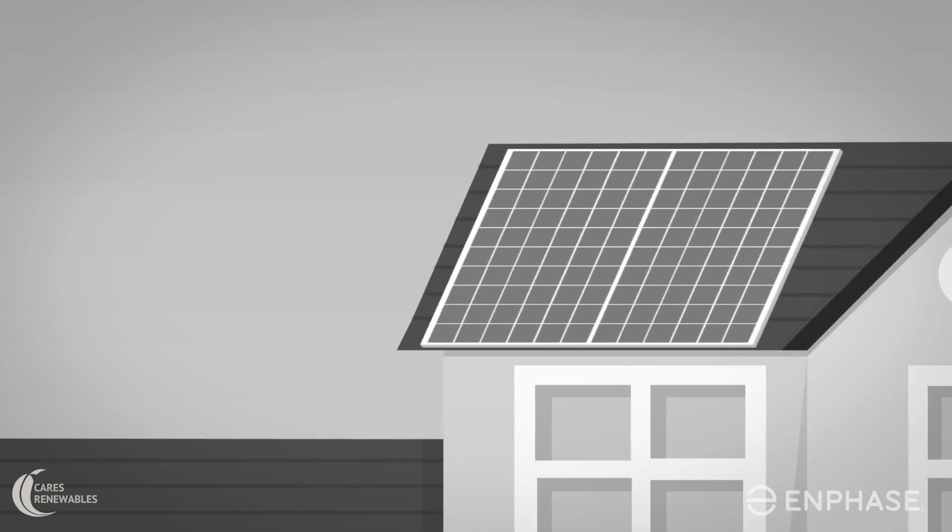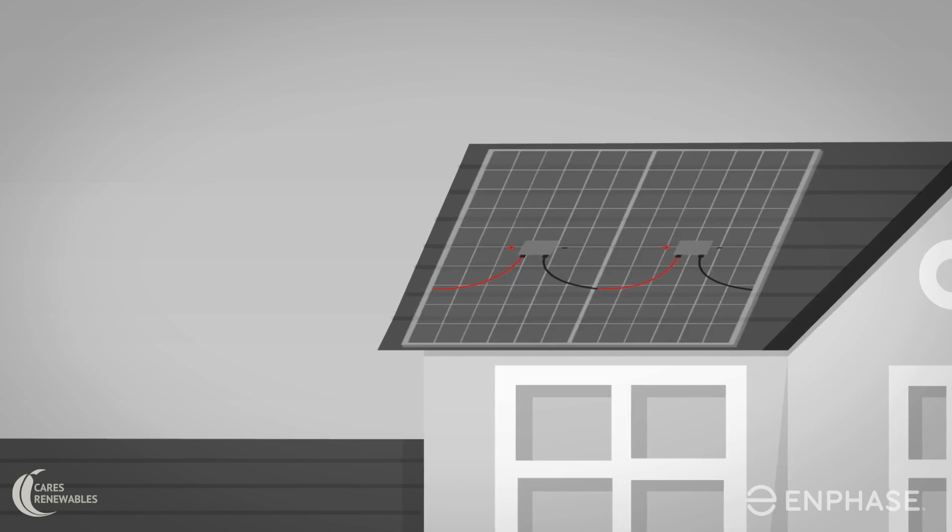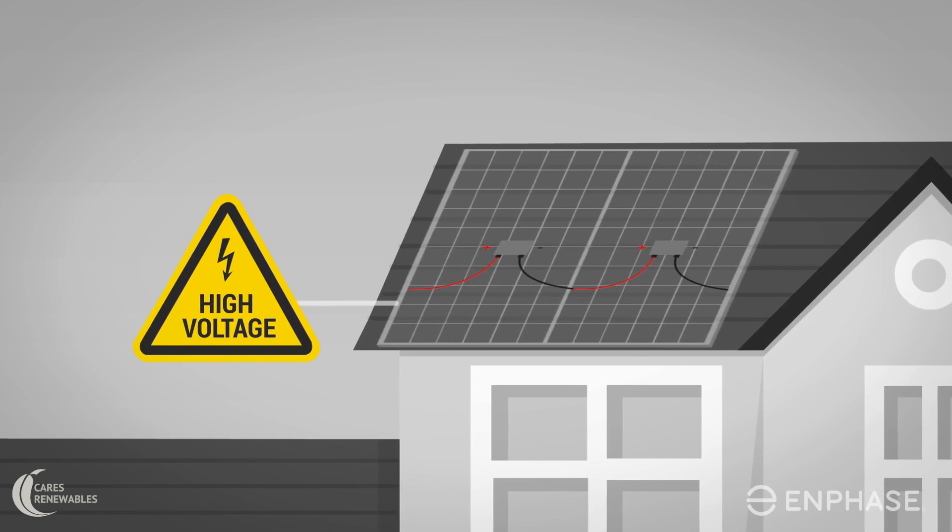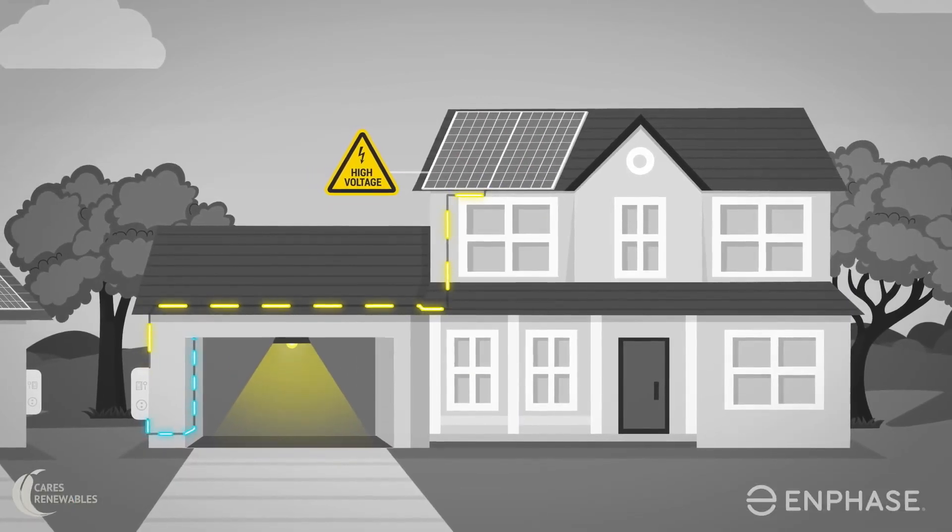In a solar string inverter design, solar modules are connected together in series, which creates DC voltage as high as 800 volts on your roof. The high-voltage DC cables are then connected to solar inverter for conversion to AC.